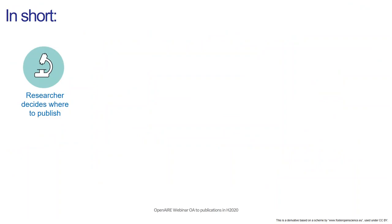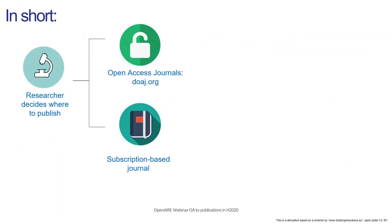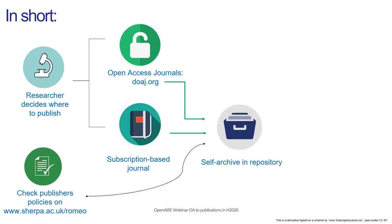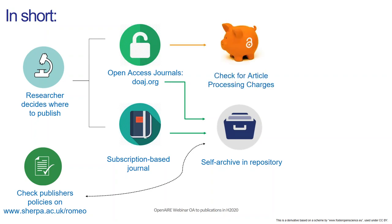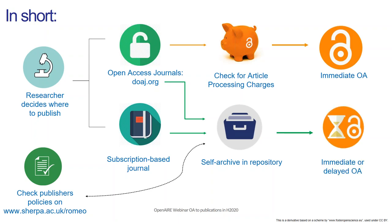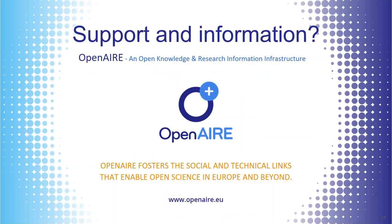In short, let's recap. Researchers can decide where to publish — you're free to choose wherever you want, either in an open access journal (consult DOAJ.org for a list of high-quality open access journals) or a subscription-based journal. Remember to always upload a copy of your publication in a repository and check the publisher policies on what you can deposit. If you go for an open access journal, check if there are any costs involved; then you can provide immediately open access. If you go for a subscription-based journal, there might be an embargo, or often you can also provide open access immediately.